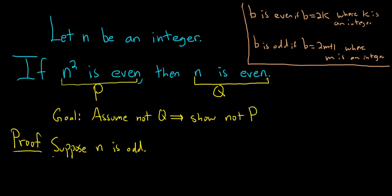Okay, so we've assumed not q is true. Now we have to show not p is true. In other words, we have to show n squared is odd. Before we do that, we typically have to use what we have already written down. We've written down that n is odd. So let's go ahead and write down what that actually means. This means that n is equal to 2m plus 1, where m is an integer.